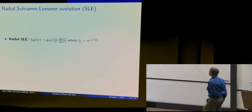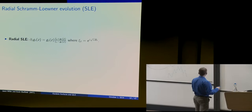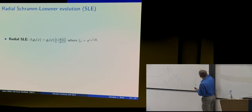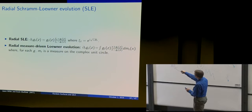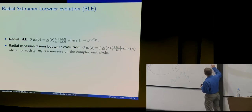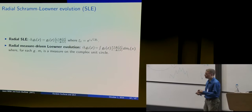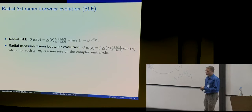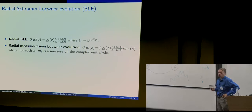There's a radial analog of SLE with a parameter κ, which gives a way of drawing a path from the boundary to the middle of a disk. There's also a measure-driven analog of Loewner evolution: instead of growing from a single point, you could grow from multiple points at the same time — a little from here, a little from there. This idea of a Loewner evolution driven not by a point but by a measure gives you a way of growing a fractal that's not a path but a growth process. This will be relevant when I discuss quantum Loewner evolution later.